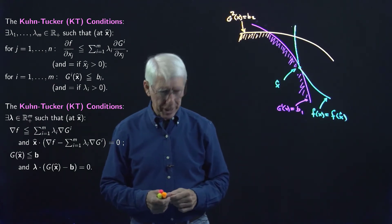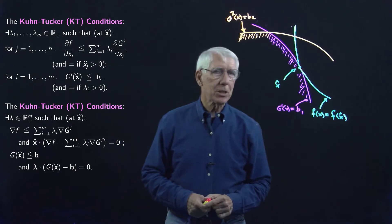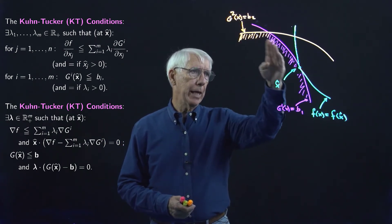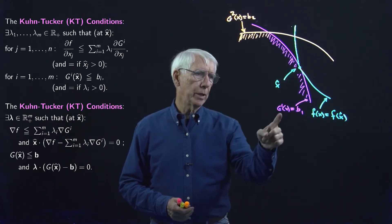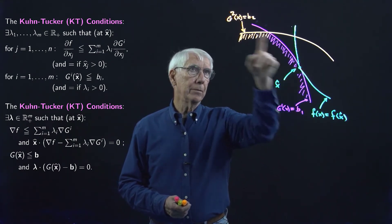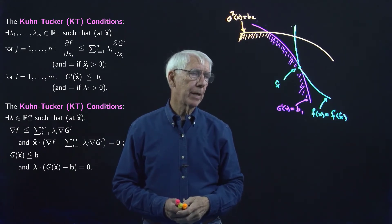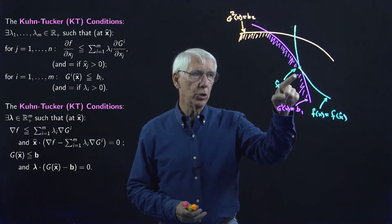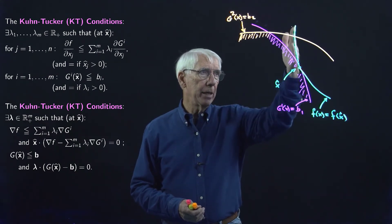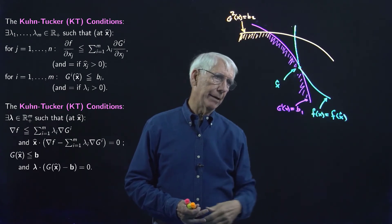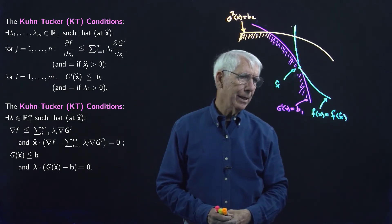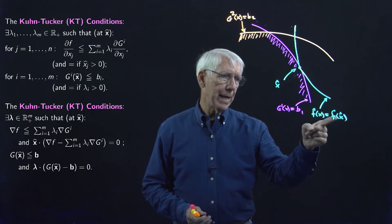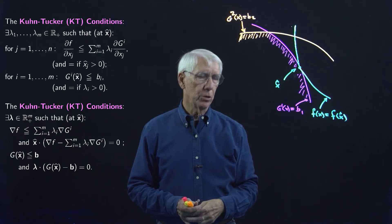We're back with another example. Here I have a pink constraint, the G1 constraint, and an orange constraint, the G2 constraint. Here's my X hat, my candidate for being a solution of our maximization problem. And in an iridescent yellow-green, I have the level curve of the objective function passing through that proposed solution.